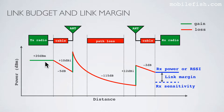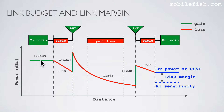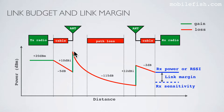Everything shown in green are gains, and everything shown in red are losses. The radio transmitter value must be specified in dBm, otherwise you do not know its absolute value. The cables including connectors, and the signal propagating through the medium, are all losses, and these values are expressed in the unit dB.